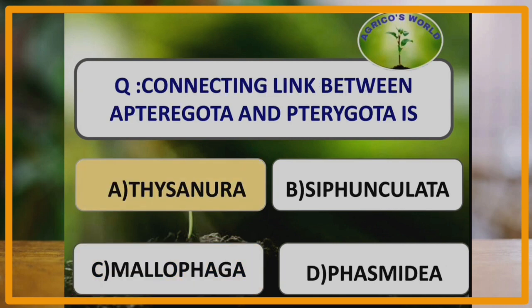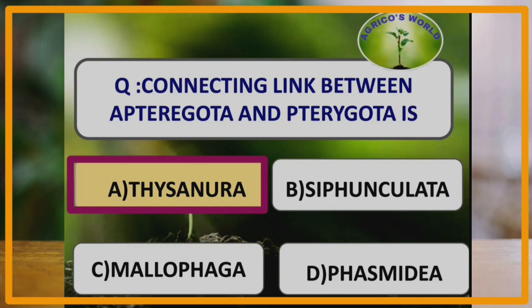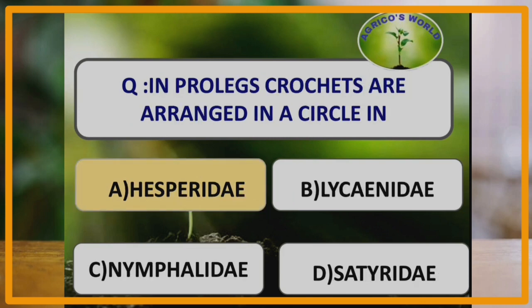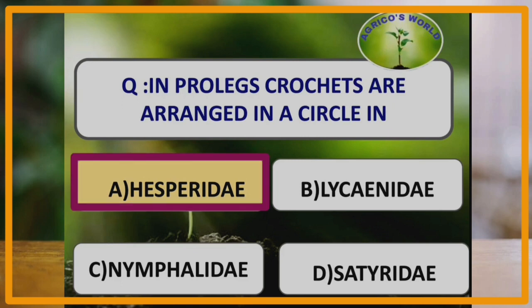The largest order is Coleoptera, which is the largest order among all insect orders. The connecting link between Apterygota and Pterygota is Thysanura.